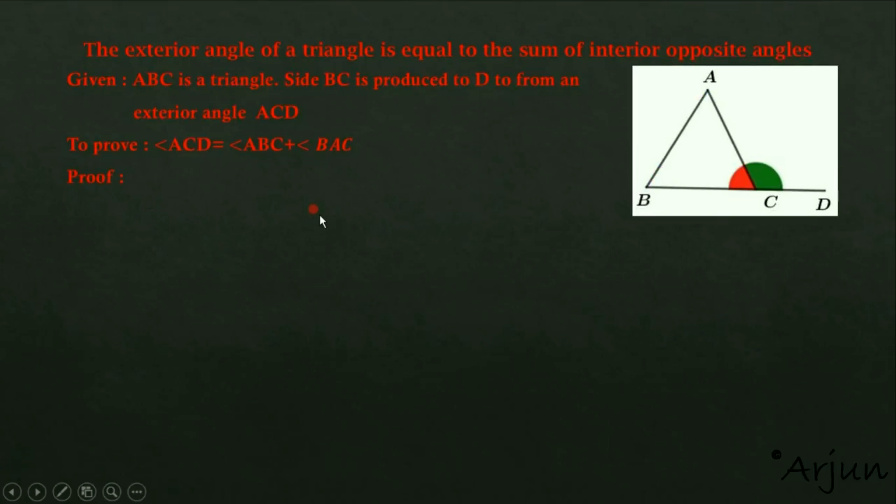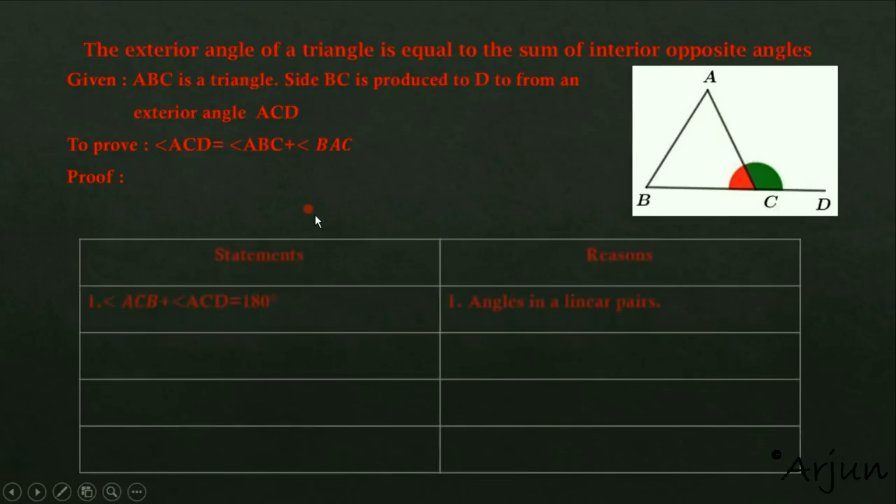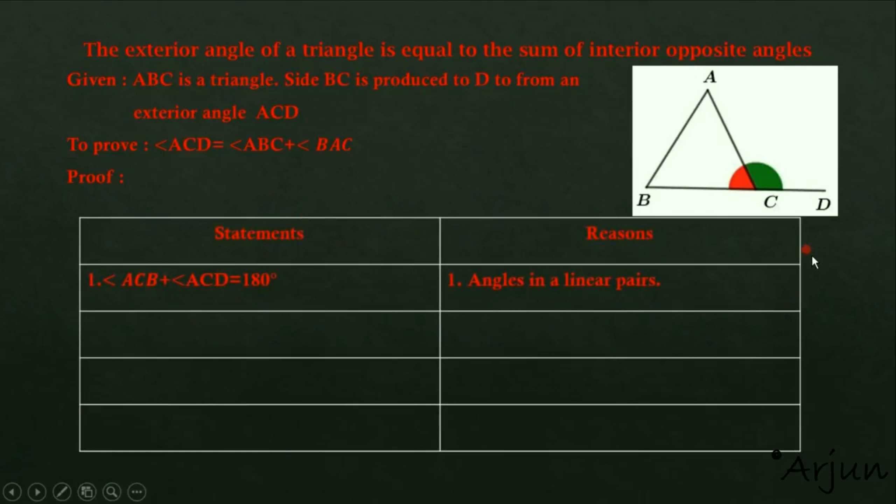Here the proof starts. We'll use a statement and reason table. Statement one: angle ACB plus angle ACD equals 180 degrees. Look here. These two angles, ACB plus ACD, equal 180 degrees. This is a linear pair on a straight angle.